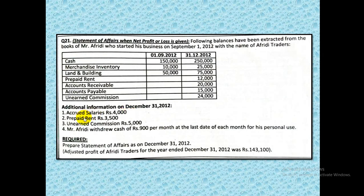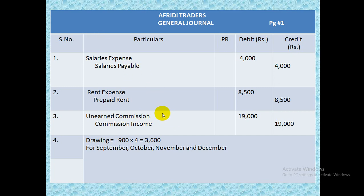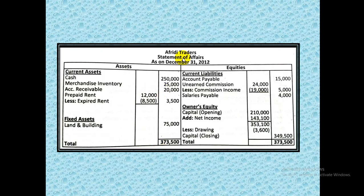The third adjusting point is unearned commission of 5,000. Unearned commission given at year-end balances was 24,000; now they are telling us only 5,000 is left — so whatever is no longer unearned has become commission income, meaning we have earned it. The entry is: unearned commission debit (because it decreased from 24,000 to 5,000) and commission income credit. Drawings total 900 per month times 4 months equals 3,600.